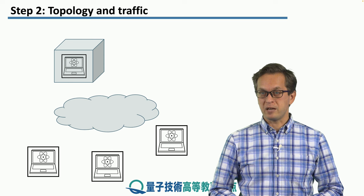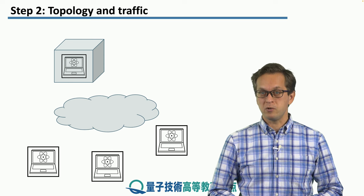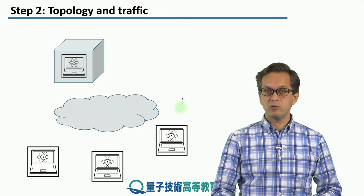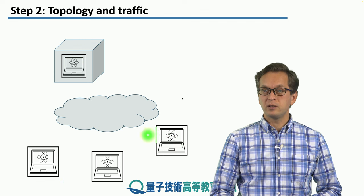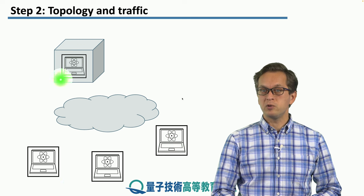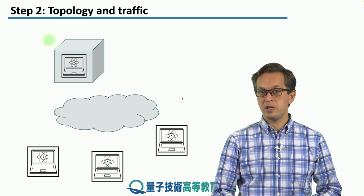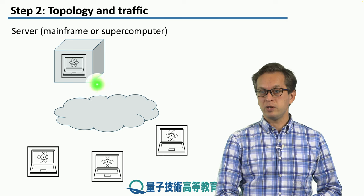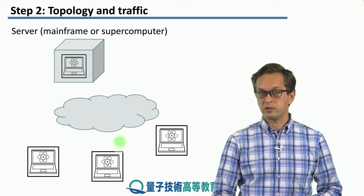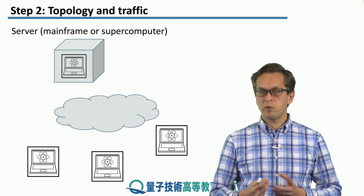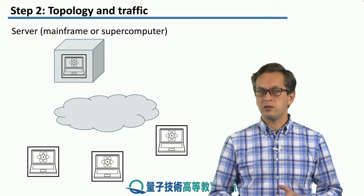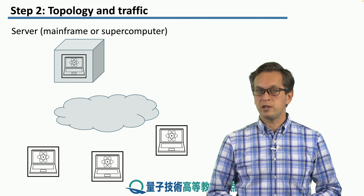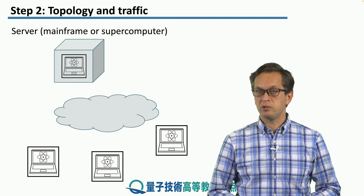Let's talk about an abstract example first before we consider concrete examples and implementations. Here we've got three clients that wish to make use of a quantum mainframe here at the top, and this cloud in between represents our abstract network. We were always saying that the clients or the end nodes can use the network to connect to the mainframe.